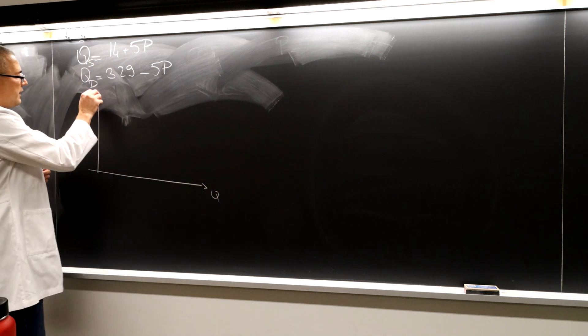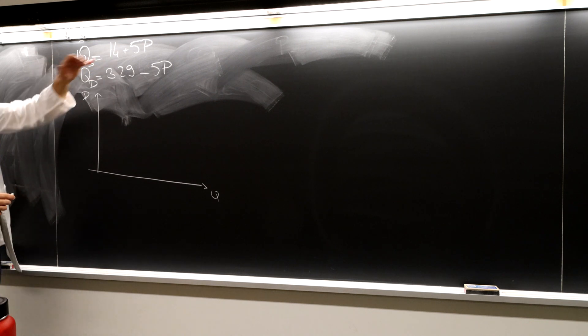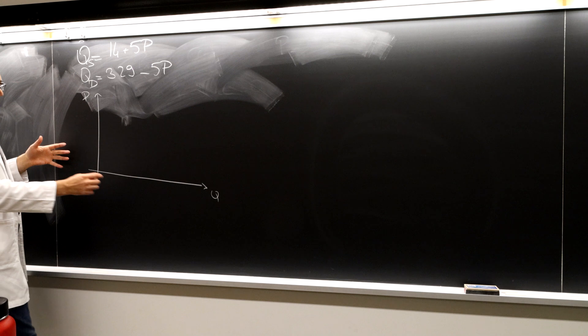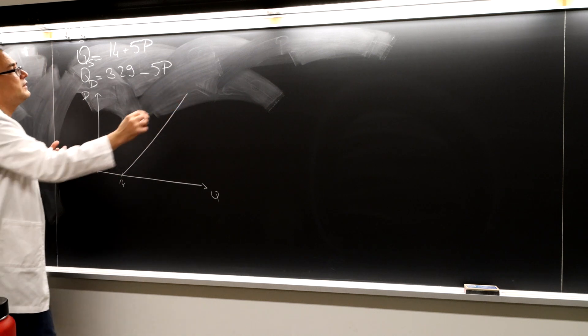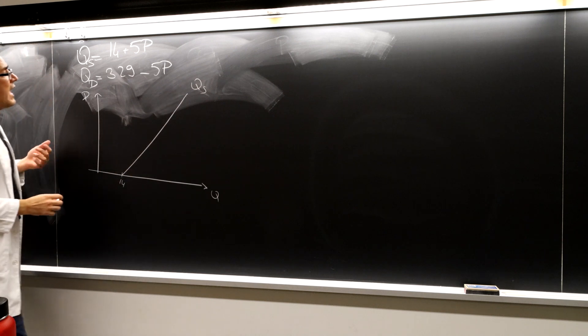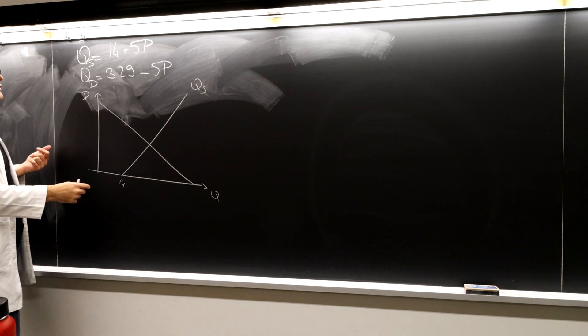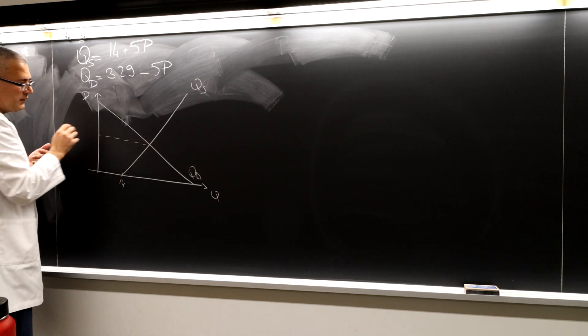So this is quantity, this is price graph as usual. The supply curve is 14 plus 5P. So even P is 0, it's going to start from 14, and so this is what supply curve is. And then the demand curve, I just roughly draw it this way, is this QD. And so the market price should be this.